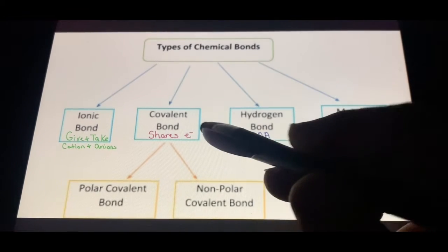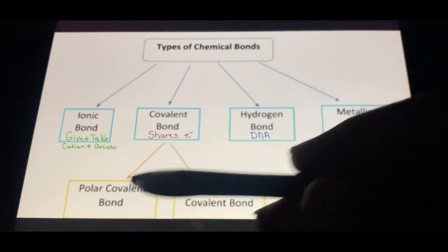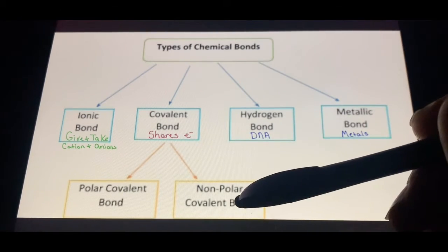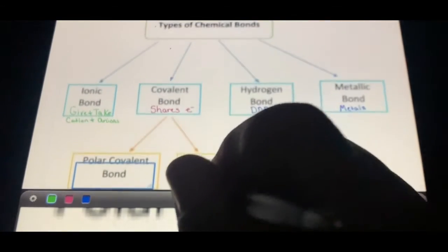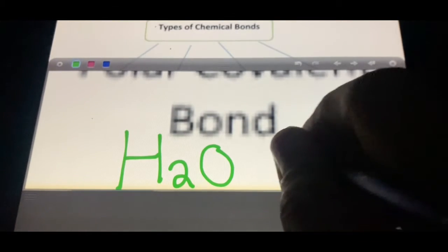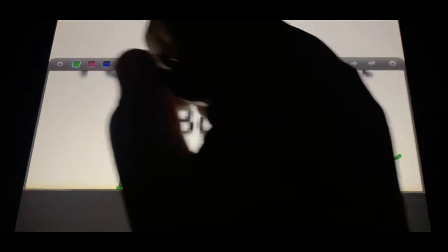Underneath covalent bonds, we have two types: polar covalent bonds and non-polar covalent bonds. Both of these you've interacted with in your world. One of the top examples of a polar covalent bond is H2O, water. A non-polar covalent bond would be like oil.